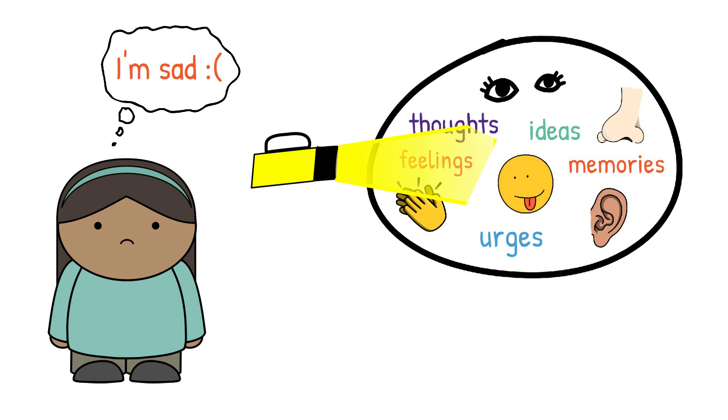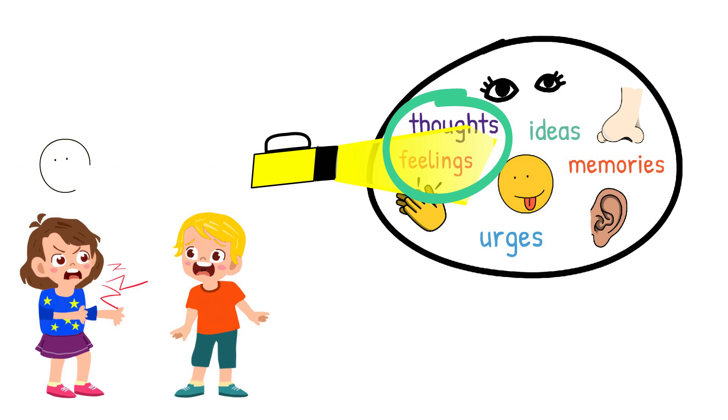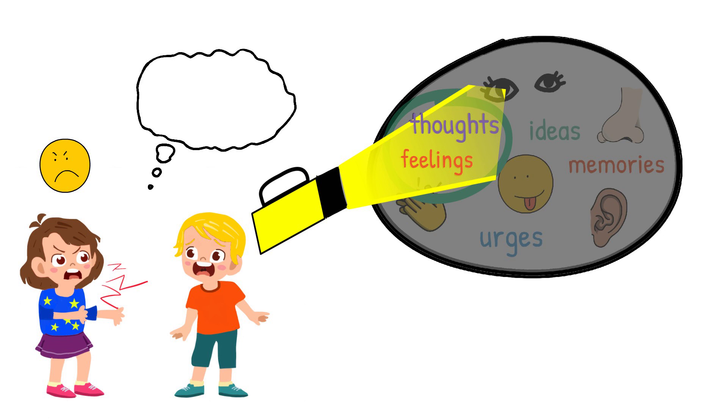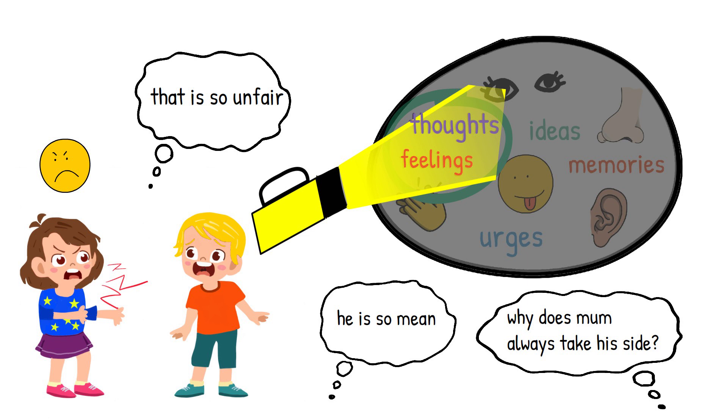In fact the thoughts and feelings are actually related. Imagine that you have a strong angry feeling towards your brother. The torch would shine brightly on feeling angry but it would also shine brightly on some thoughts such as that's so unfair, he's so mean or why does mum always take his side.